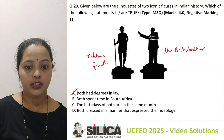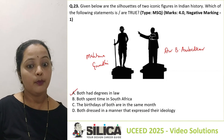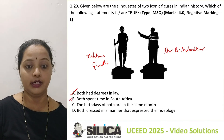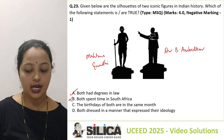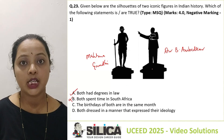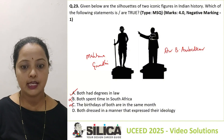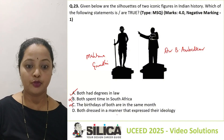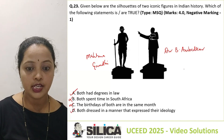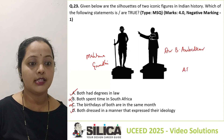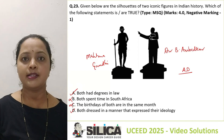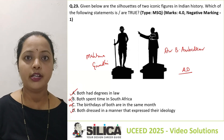Option A: both had a degree in law — definitely correct. Option B: both spent time in South Africa — no, it was only Mahatma Gandhi, so B is incorrect. Option C: the birthdays of both are in the same month — no, Gandhi's is in October and Ambedkar's is in April, so C is not correct. Option D: both dressed in a manner that expressed their ideologies — definitely correct. The correct answers are A and D.